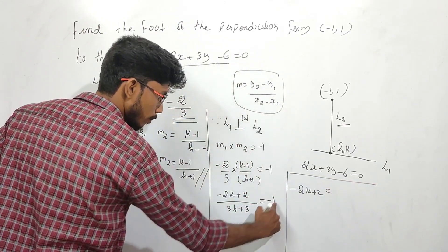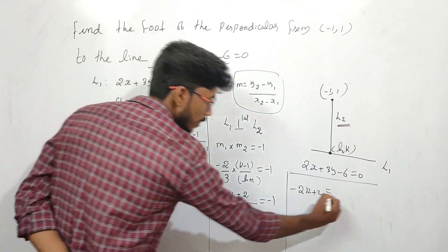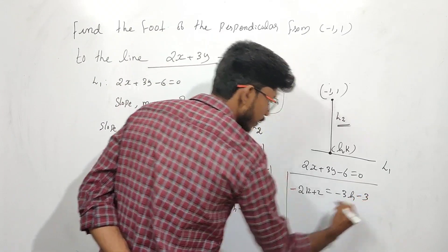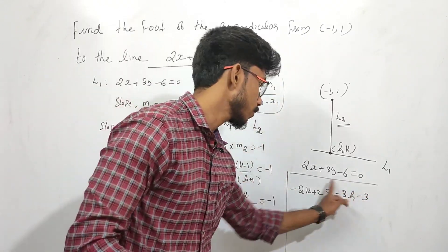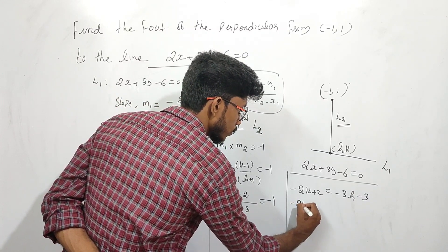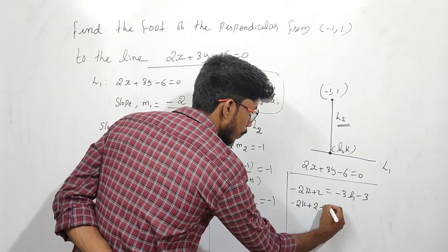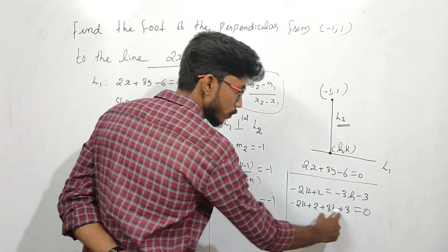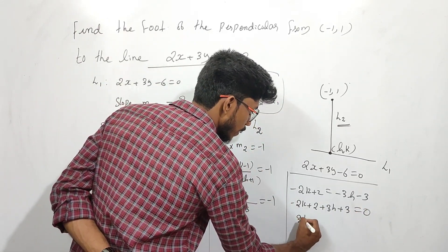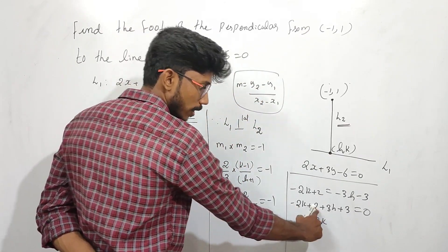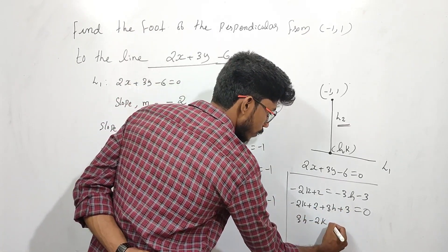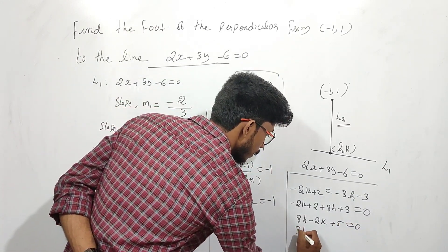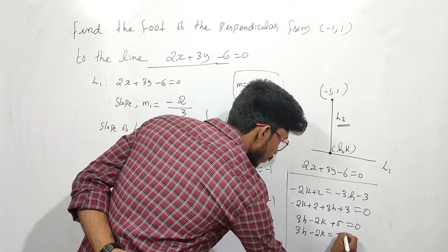Solving gives: minus 3h minus 3 equals minus 2k plus 2. Rearranging: 3h minus 2k plus 2 plus 3 equals 0, which gives 3h minus 2k plus 5 equals 0. Therefore 3h minus 2k equals minus 5. This is equation number 1.